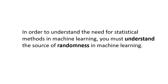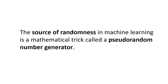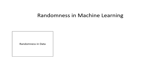Randomness is a big part of machine learning — a tool or feature in preparing data and in the learning algorithms that map input data to output data to make predictions. In order to understand the need for statistical methods in machine learning, you need to understand the source of randomness. The source of randomness in machine learning is a mathematical trick called a pseudo-random number generator. There are many sources of randomness in the applied machine learning space, and randomness is used as a tool to help learning algorithms be more robust and ultimately result in better predictions and more accurate models.